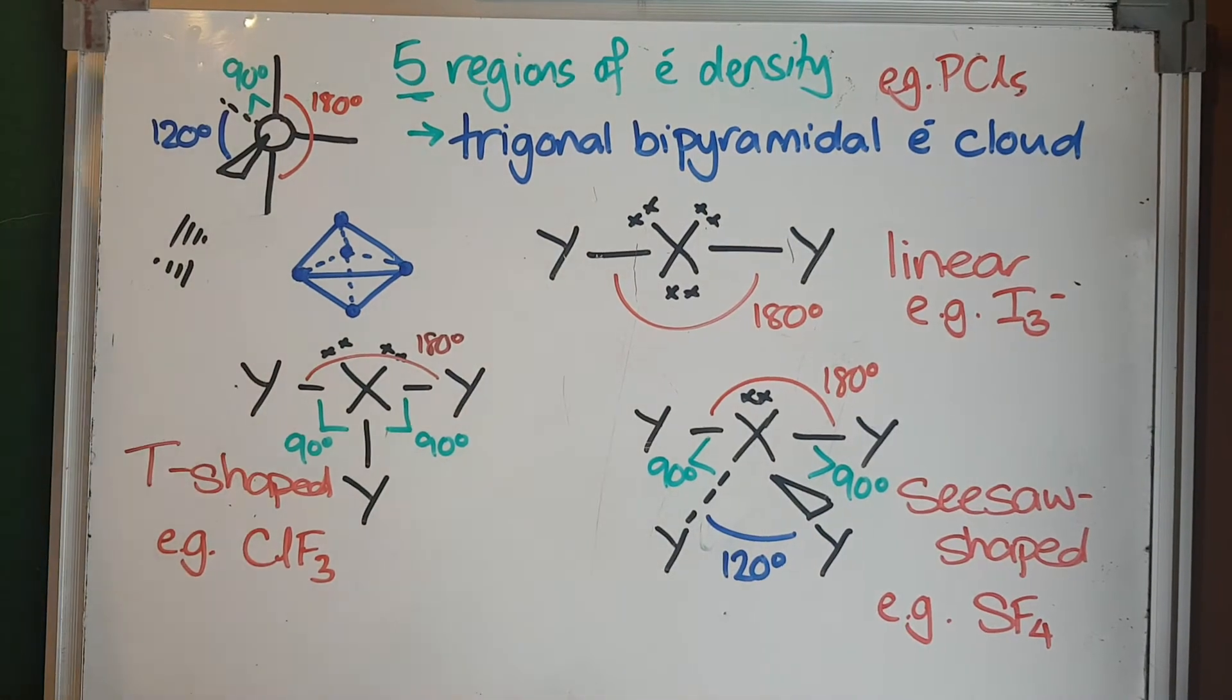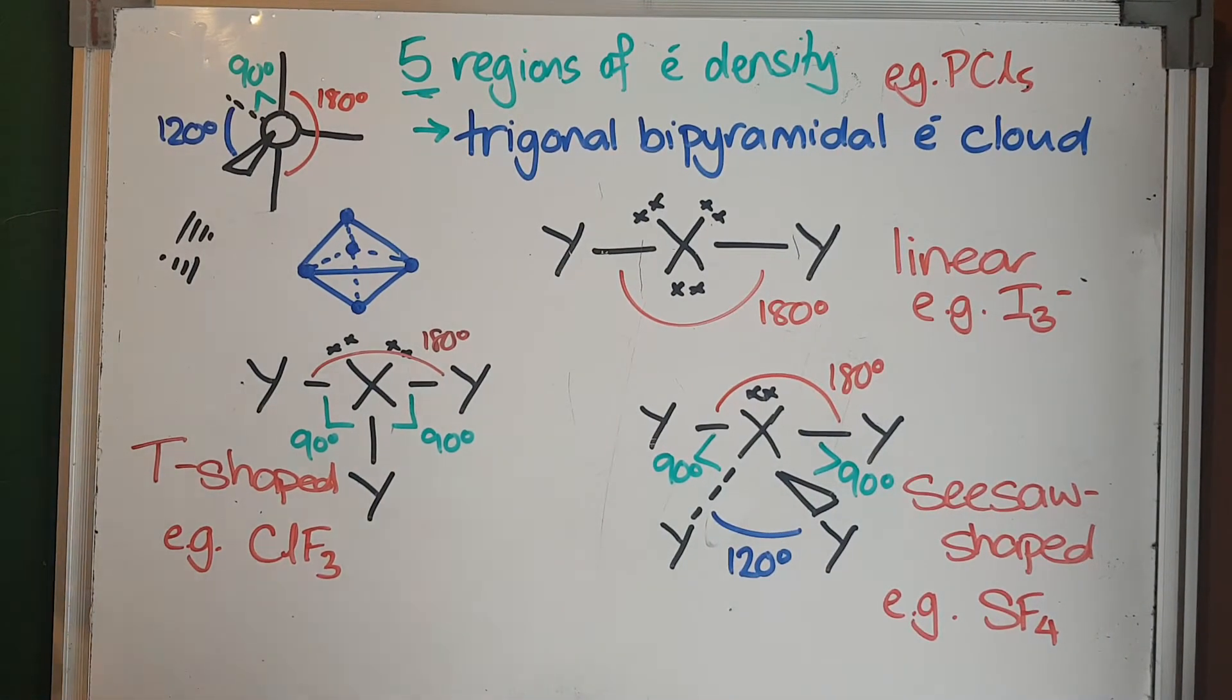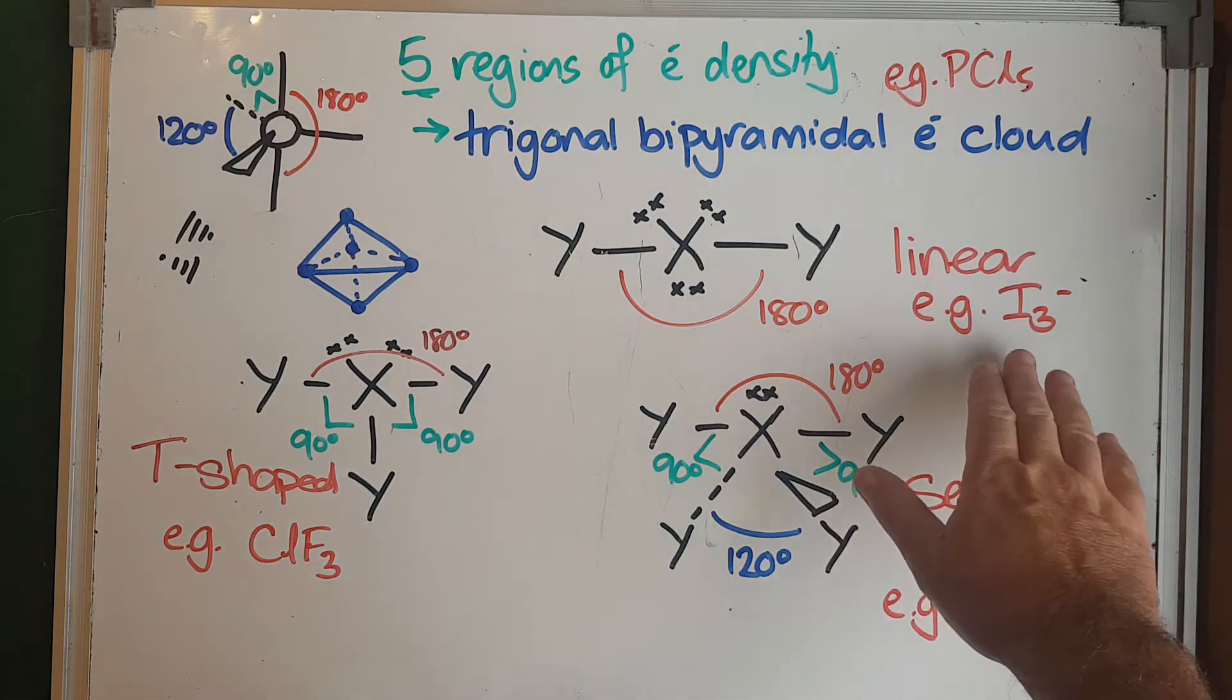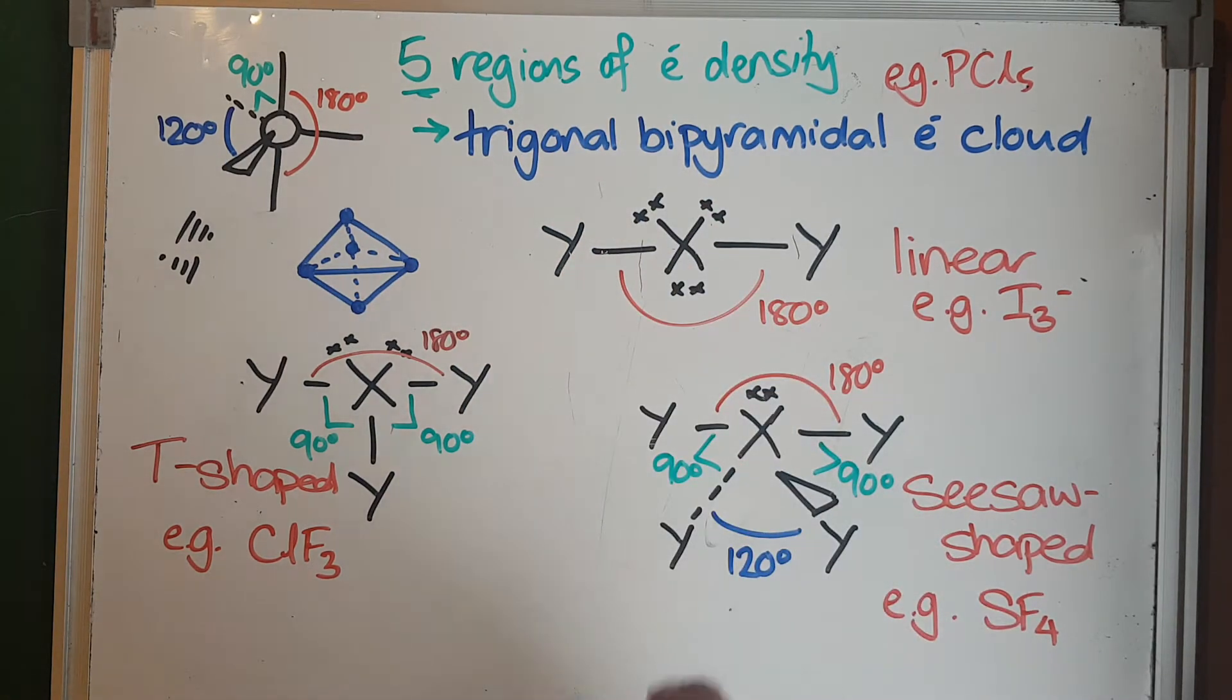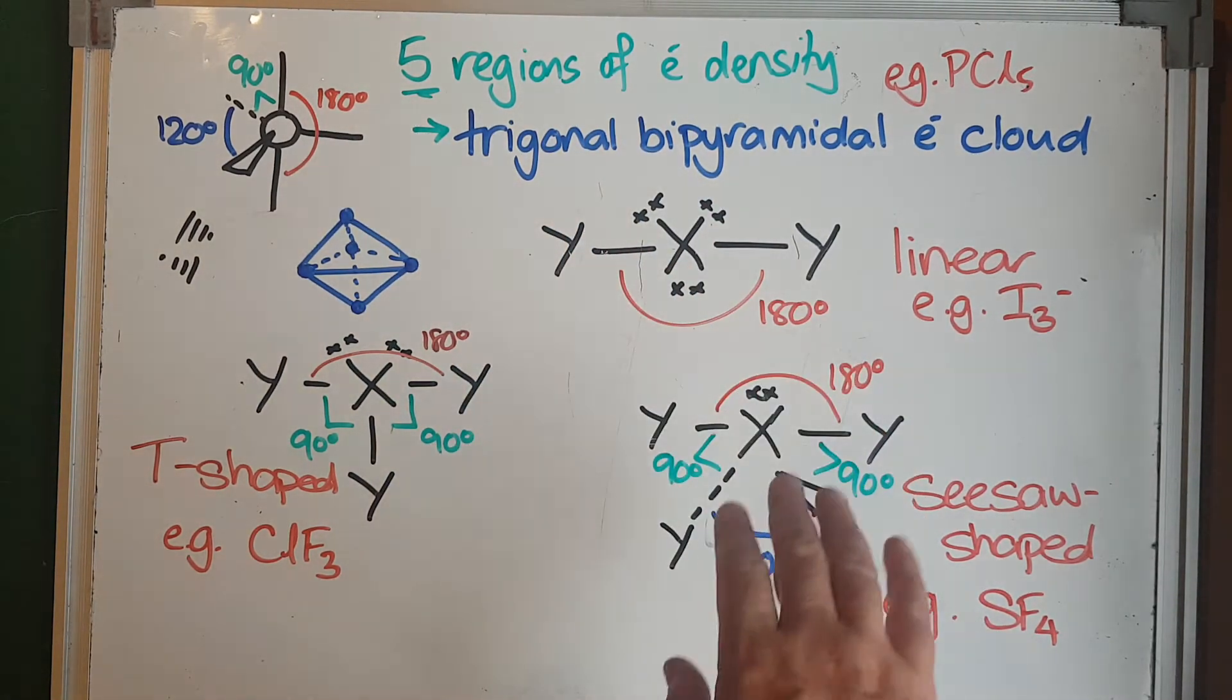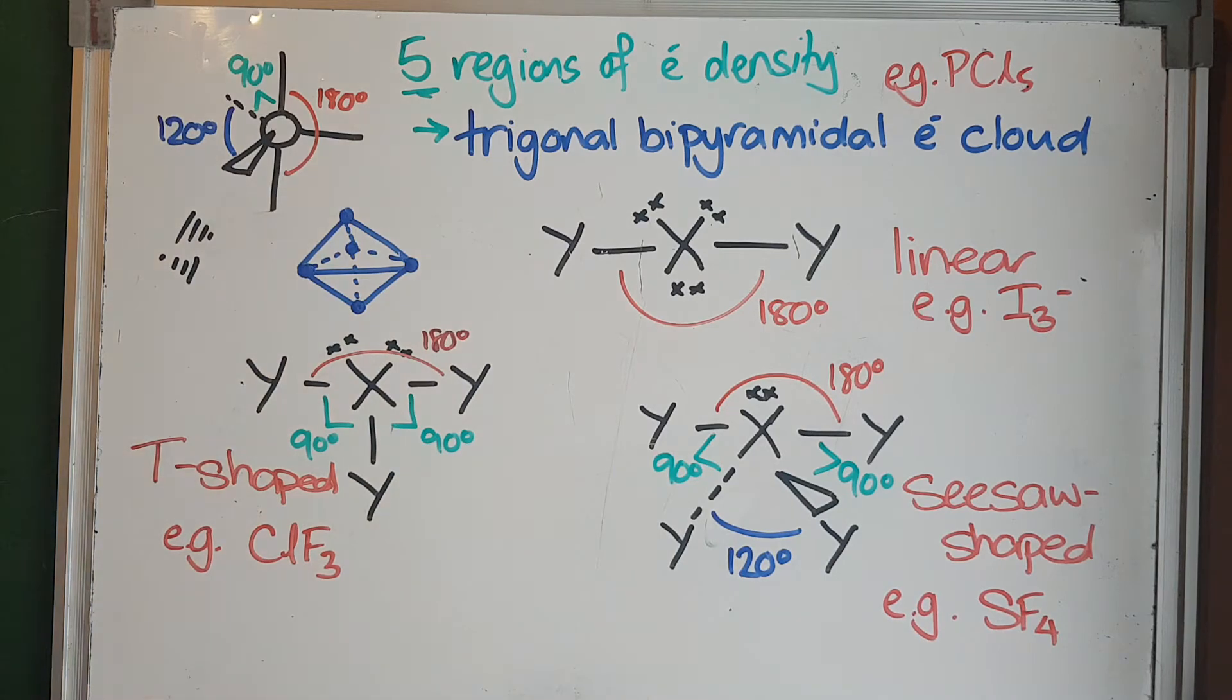But sometimes we have molecules and ions that have lone pairs of electrons—they're not all bonding. Because we don't use the lone pairs as part of our shape, they only determine the bond angles. We need to have a look at what those shapes would be. The first one I'm going to look at is the I3- ion. It has three lone pairs around the central iodine, and these two iodines are obeying the octet rule with a single bond.